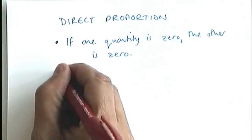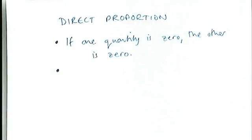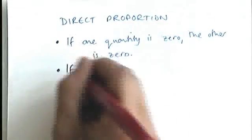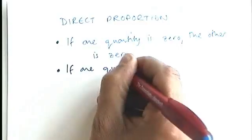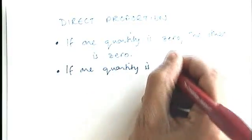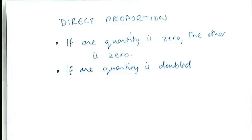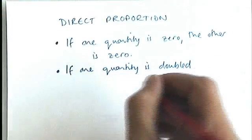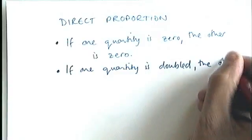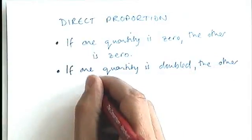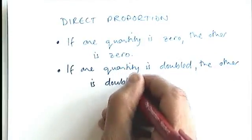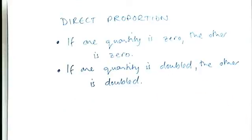The second sort of quality of direct proportion is that if one quantity is doubled, or tripled, or quadrupled, but we'll stick with doubled for a moment. If one quantity is doubled, the other quantity is doubled as well. And that corresponds in this recipe example, if I made twice as many milkshakes, I would need twice as much milk.